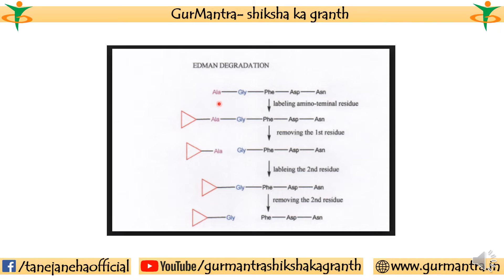For that, a technique was developed by Pehr Edman, called Edman degradation, named after him. In this method we break down the peptide and determine what the first amino acid is. We don't know yet whether the first position is alanine, glycine, phenylalanine, or aspartate — we have to find these things. We know the amino acid composition — glycine, tryptophan, proline are present — but we don't know the order. It's like knowing the alphabet letters but not their sequence.